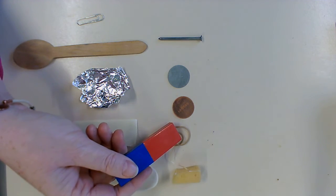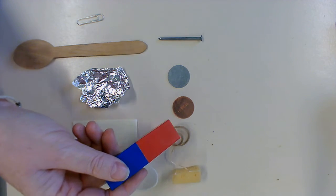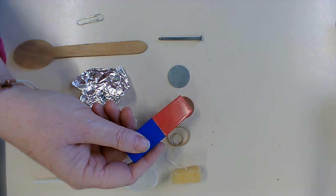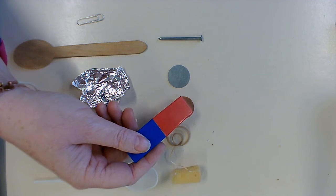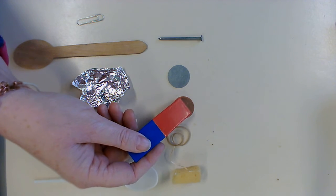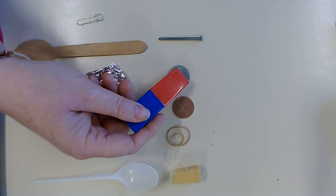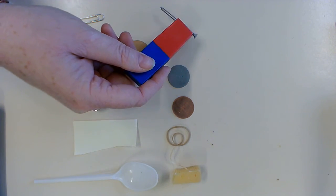Rubber. This is copper, which is similar to a 2p coin. This one is zinc. A nail.